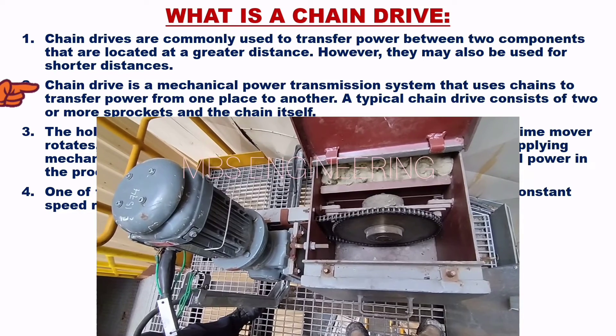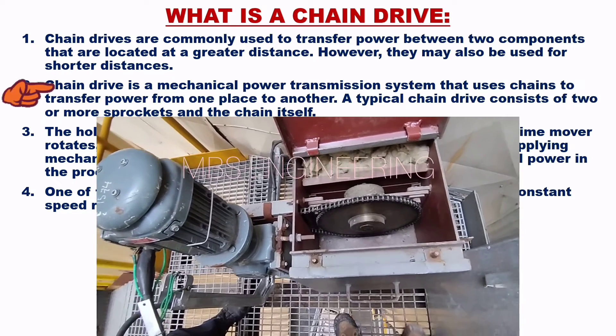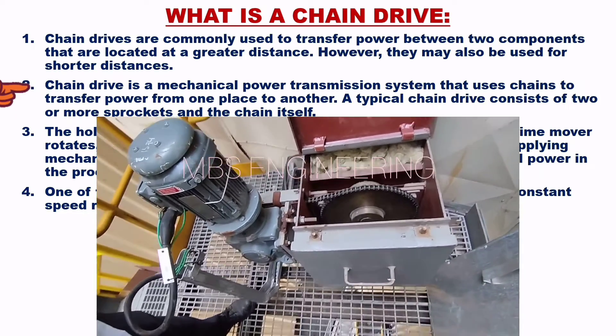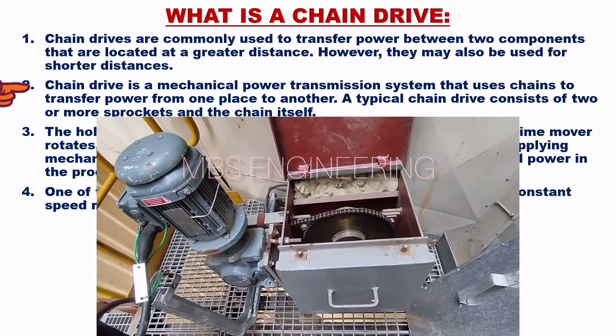The second point: chain drive is a mechanical power transmission system that uses chains to transfer power from one place to another. A typical chain drive consists of two or more sprockets and the chain itself.